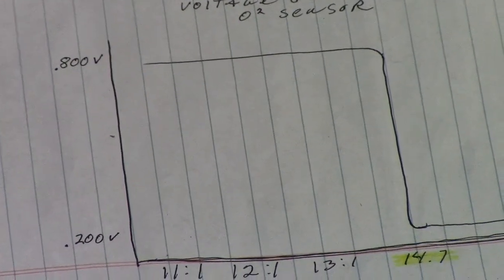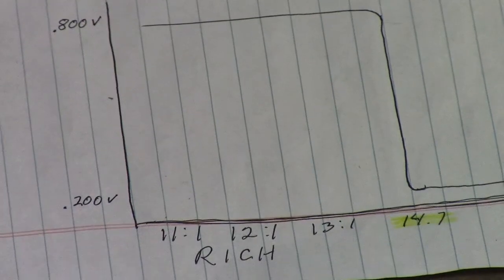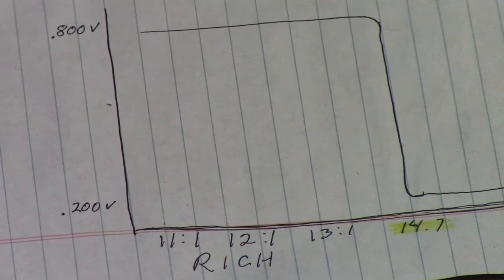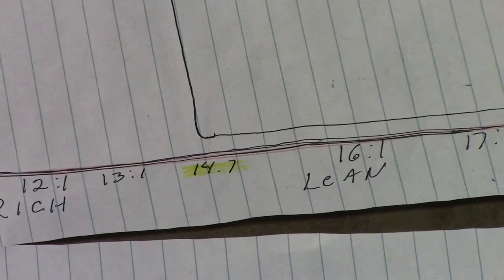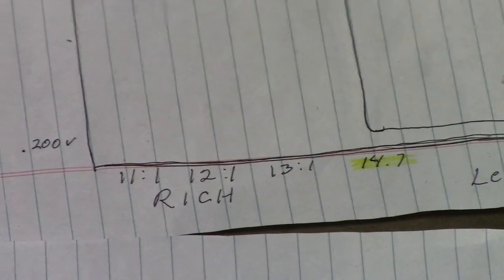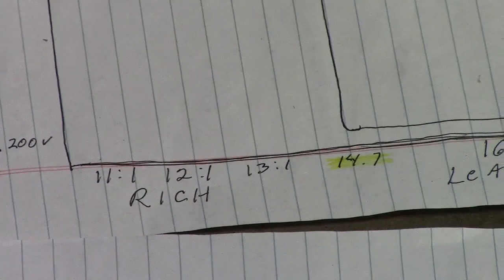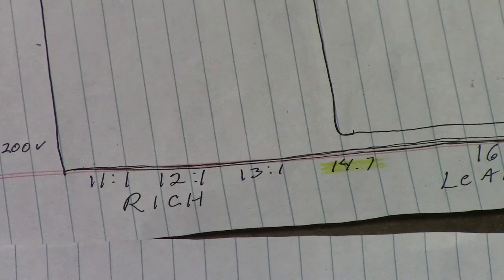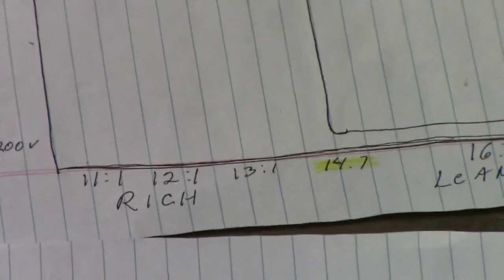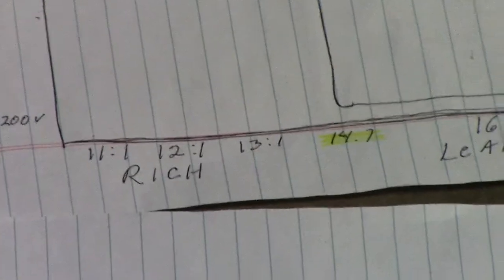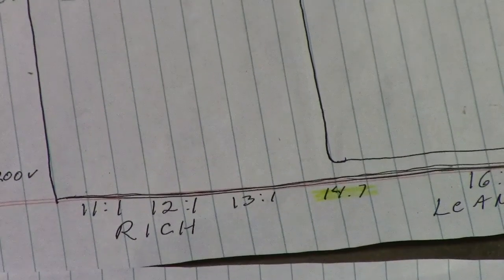Performance-wise, 14.7 to 1 is not our optimum number. We'd like to be down around 11.8, 11.7, 12 to 1 for safety reasons. But there's no way that a standard oxygen sensor can acknowledge that. So that's why we're going to install an air fuel ratio sensor.